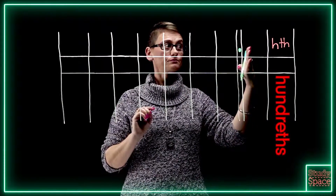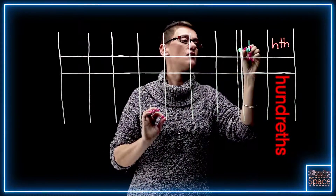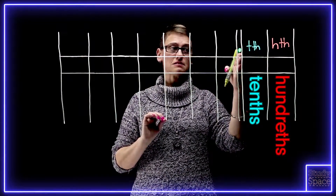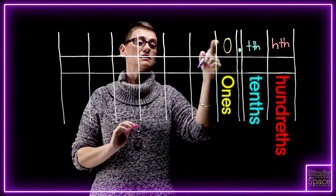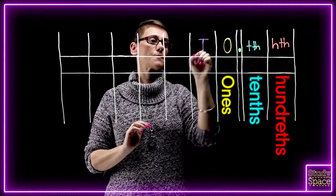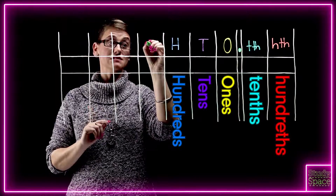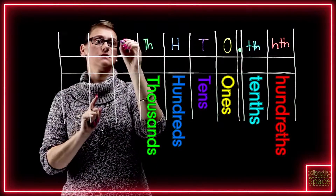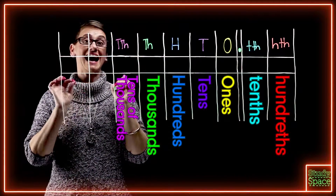Coming back, we've got tenths — still part of a whole. We're going to abbreviate that with a little T and TH for the tenth. Then we've got a decimal place, which doesn't move — it stays there. Then we start with the ones, which we'll do with an O. Then we've got tens, hundreds, and then thousands — abbreviated with a capital T and a little H.